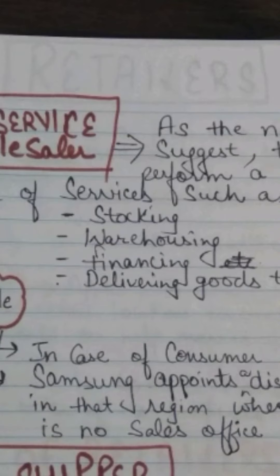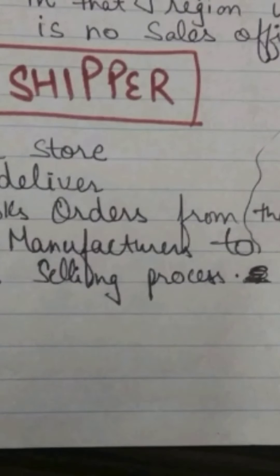For example, in the case of Samsung, if there is a region where Samsung has no sales office, they appoint a distributor who collects orders, distributes the goods, and sells them — providing full services. That is what we call a full service wholesaler. The third type is the drop shipper wholesaler — they neither store goods nor deliver them. Instead, they take orders from retailers and pass them directly to the manufacturer, who then ships directly to the retailer.